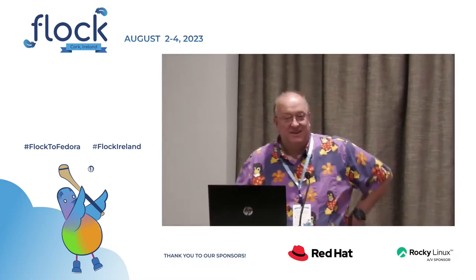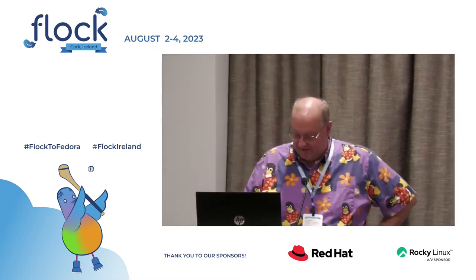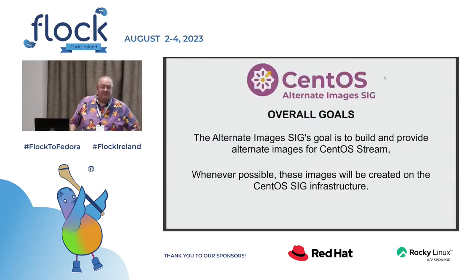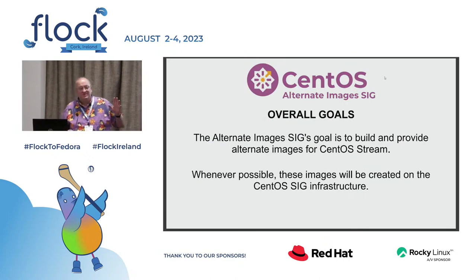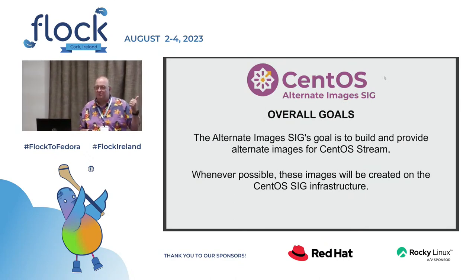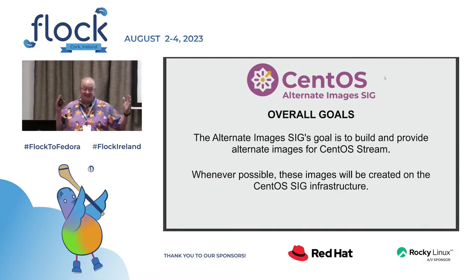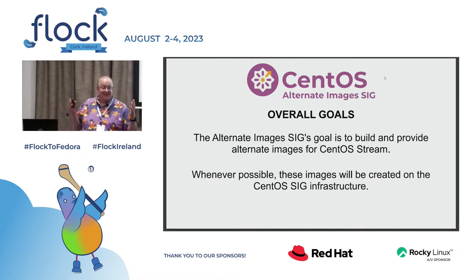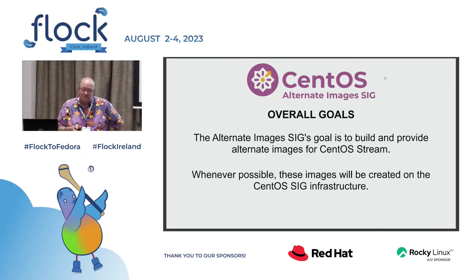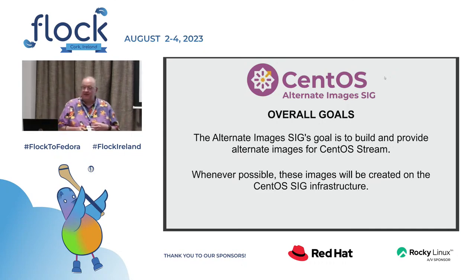Alternative images, SIG — let's talk about it. The goal of the Alternative Images SIG is to create alternative images. CentOS Stream by default comes with a netboot image and a 10-gig DVD, and there's no in-between. We want variations, and that's where this SIG was set up.